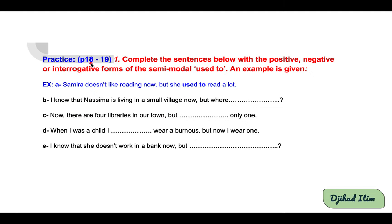Practice, pages 18–19: complete the sentences with the positive, negative, or interrogative form of the semi-modal 'used to.' Example: Samira doesn't like reading now, but she used to read a lot. She used to in the past, but she doesn't like reading now at the present. Try this activity and get back for the correction.